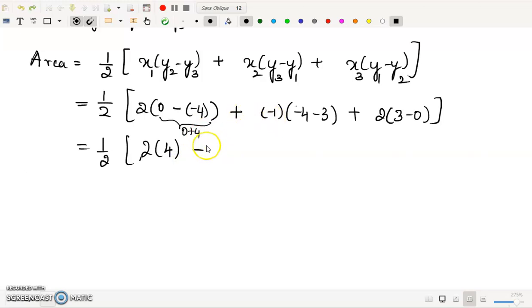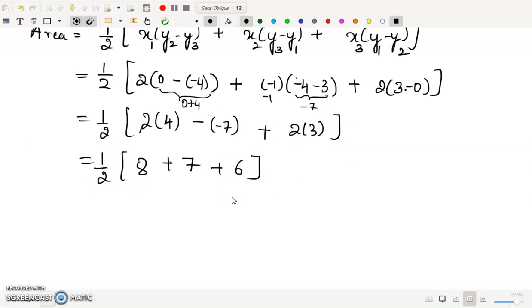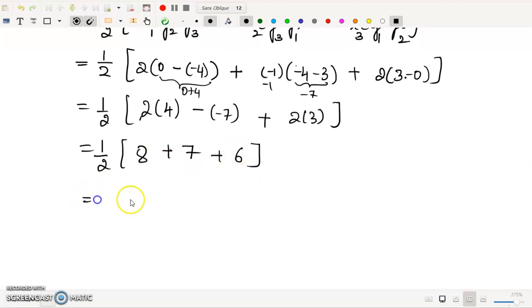Plus, minus 1. Minus 3 minus 4 is minus 7. So minus 1 times minus 7 equals plus 7, plus 2 times 3 is 6. So it is 8 plus 7 plus 6, 1 by 2 into 21, which is 10.5 square units.